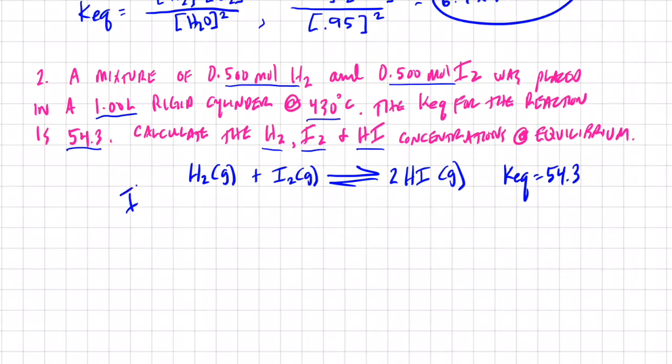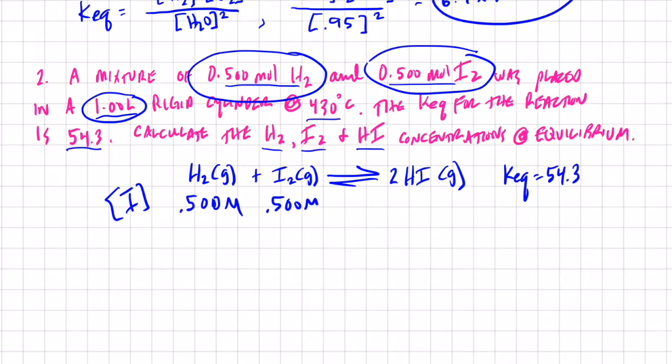So we want to find the equilibrium amounts of each reactant and each product. Let's start with our ICE box diagram. Initially, I have 0.05 moles of hydrogen in a 1 liter container. So it's 0.500 molar.